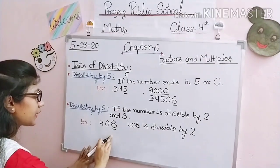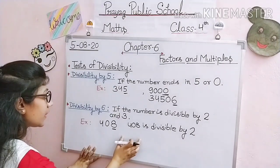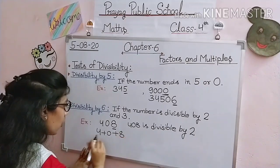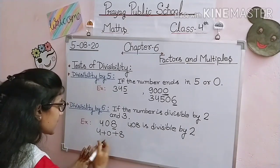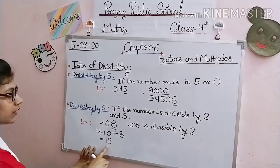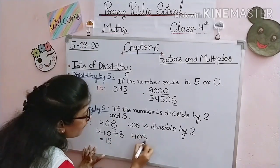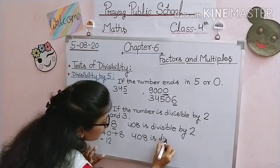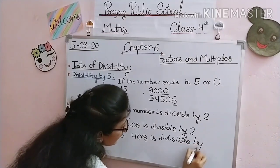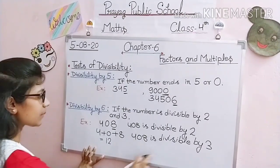Now let's check whether the number is divisible by 3. For the divisibility check by 3, we add the digits of the number. So 4 + 0 + 8: 4 + 0 = 4, 4 + 8 = 12. Is 12 divisible by 3? Yes — 3 × 4 = 12. This means 408 is divisible by 3. Since the given number is divisible by both 2 and 3, therefore 408 is divisible by 6.